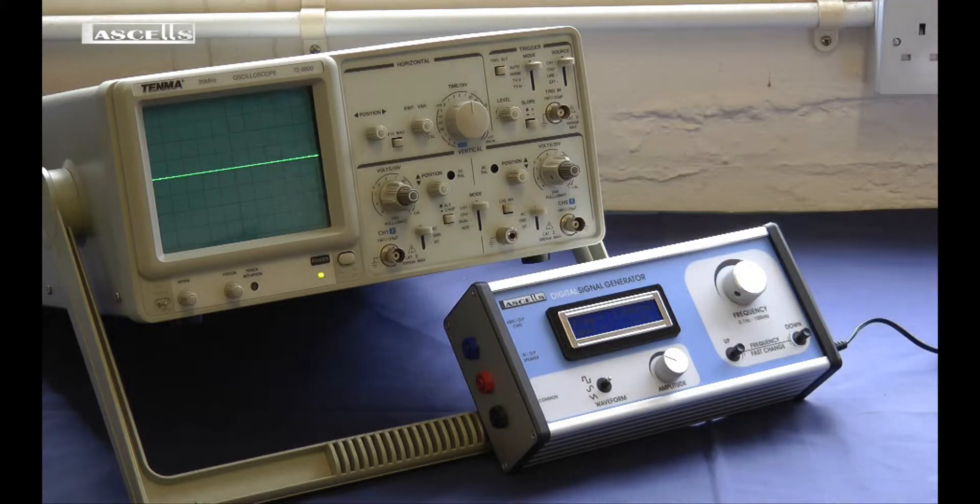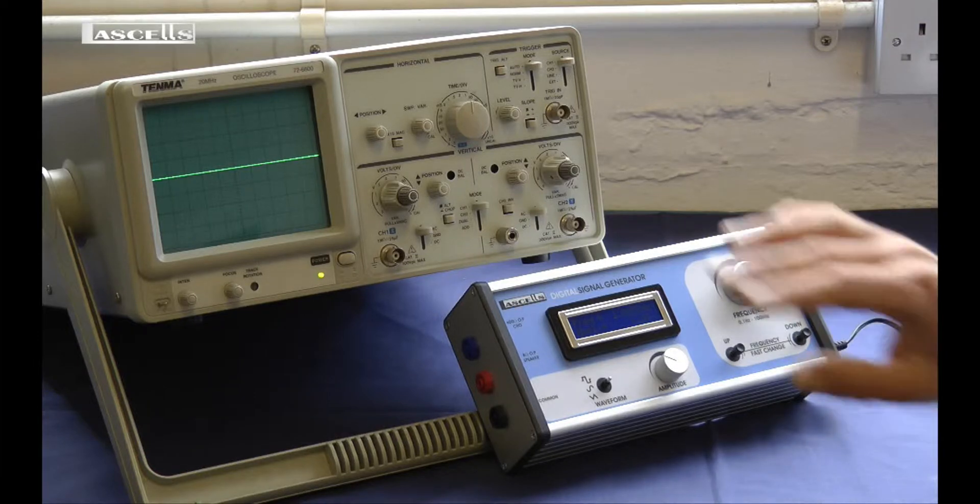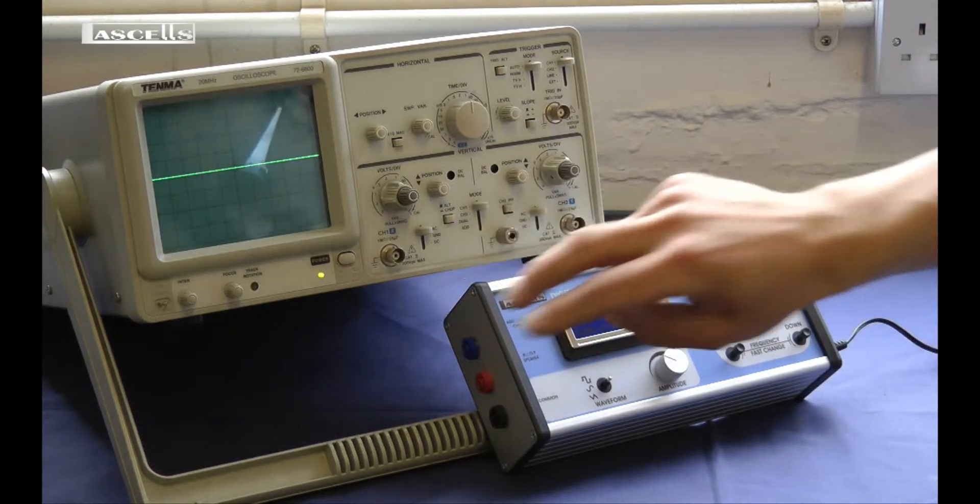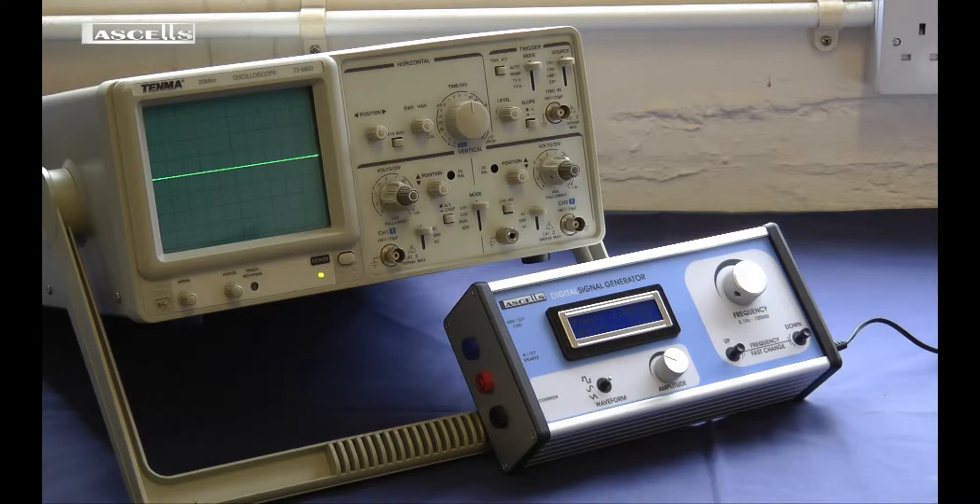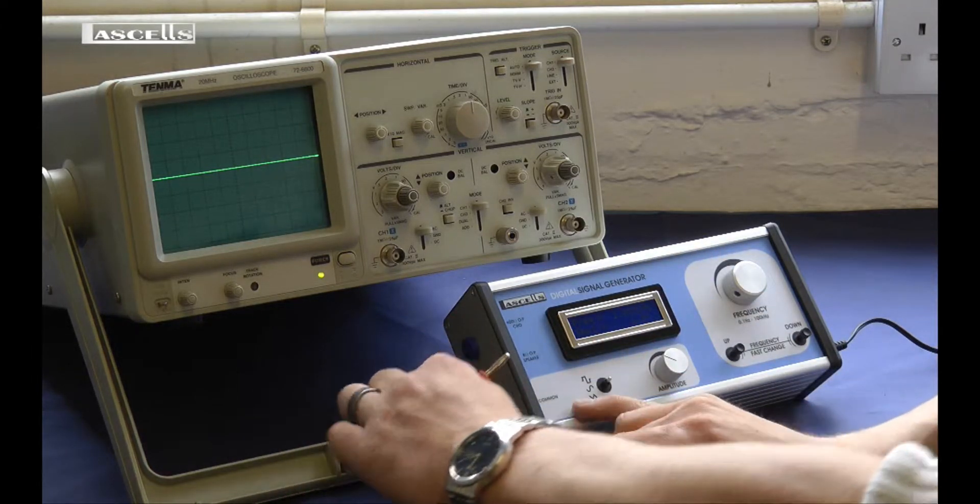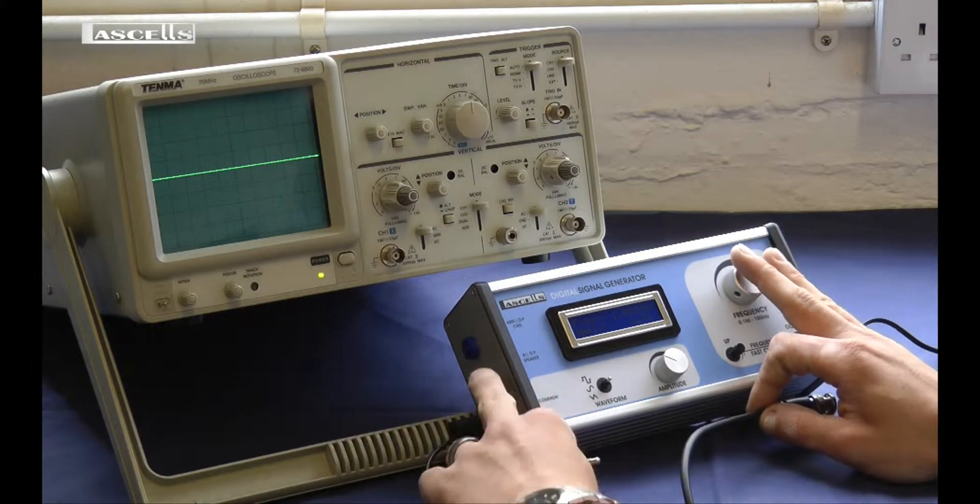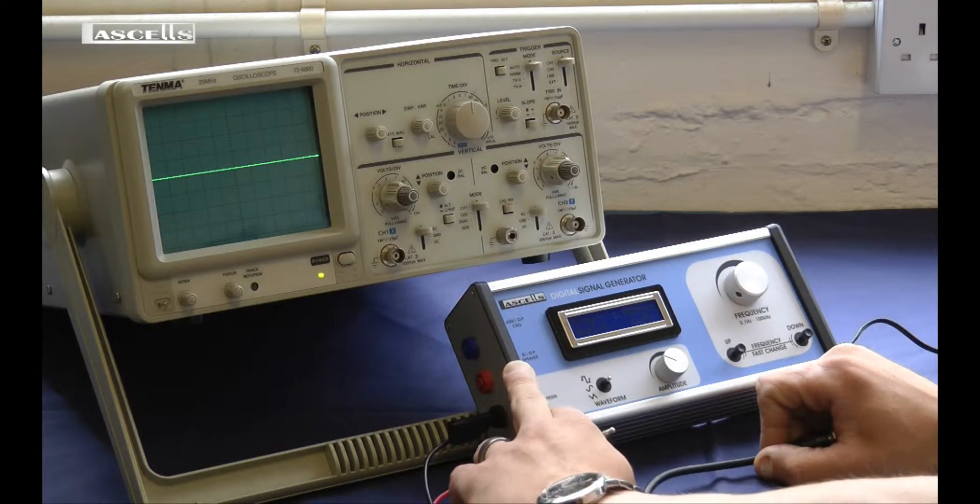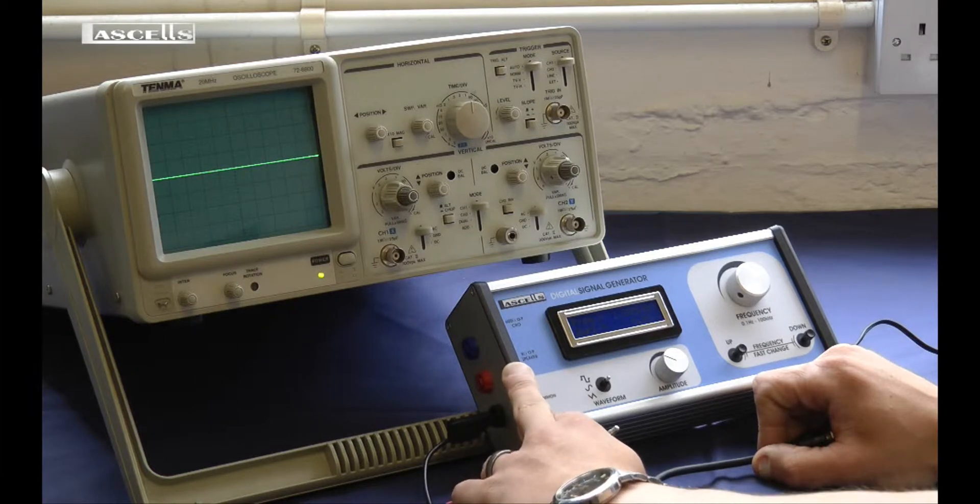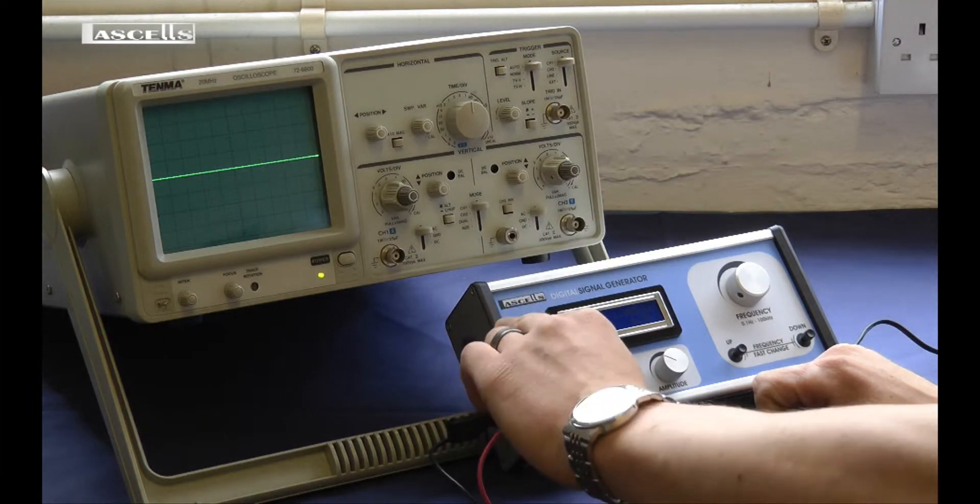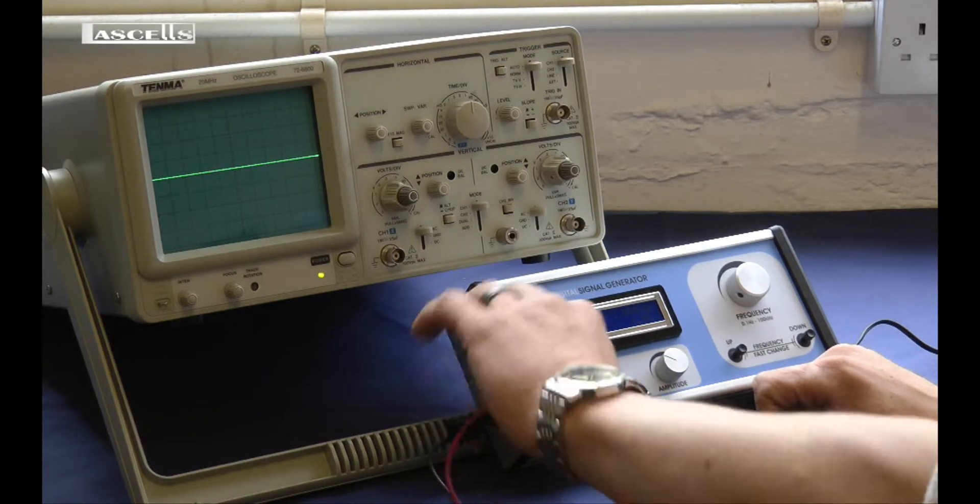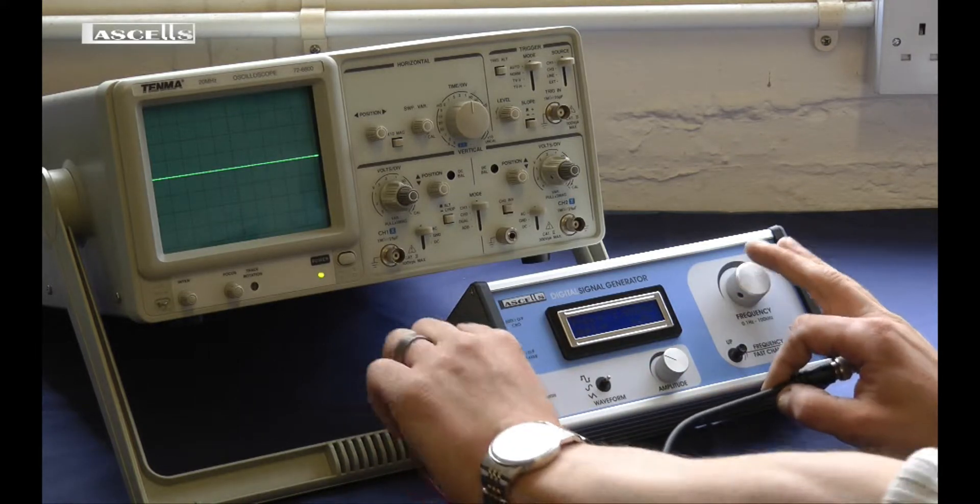The signal generator connects to the scope using a standard 4mm to BNC connector lead. The signal generator has three sockets: one common ground for the black socket, and two outputs. There's an 8-ohm output for speakers and vibration generators, and a 600-ohm output for electronics and scopes, which we'll use today.